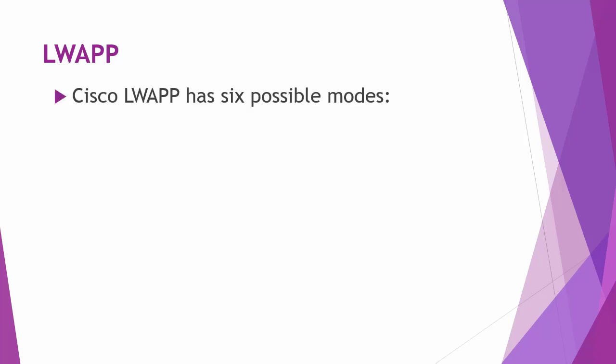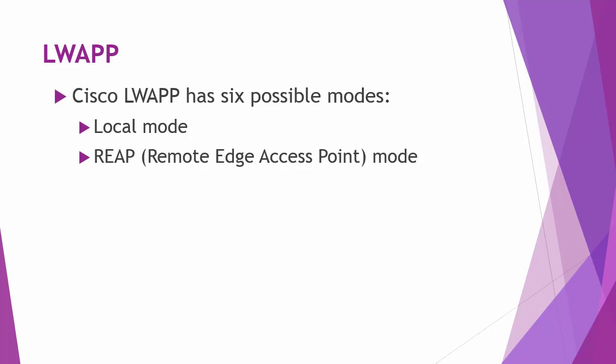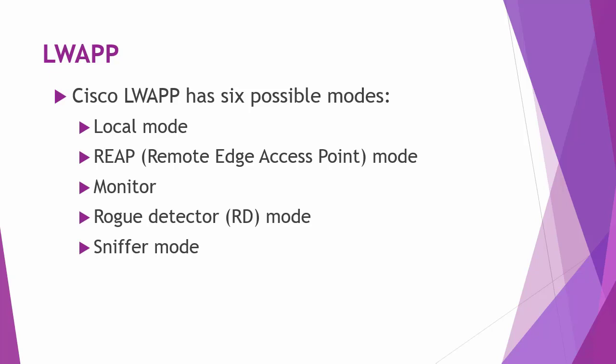The Cisco lightweight access point protocol can operate in six modes: local mode, REAP or remote edge access point mode, monitor, rogue detector mode, sniffer mode, and bridge mode. In local mode, every 180 seconds the AP spends 60 milliseconds on channels it does not operate on, performing noise and interference measurements and scanning for intrusion detection events. REAP mode allows the lightweight AP to reside across a WAN link and still communicate with the WLC. Monitor mode allows APs to exclude themselves from data traffic and instead act as dedicated sensors for location-based services, rogue AP detection, and IDS.